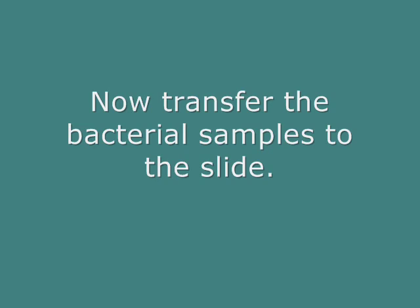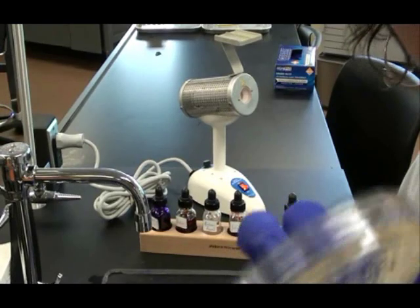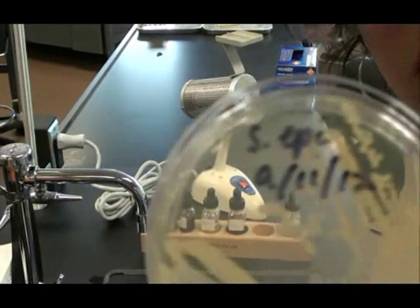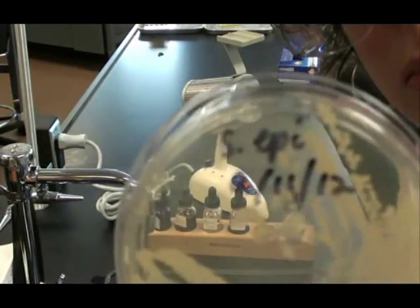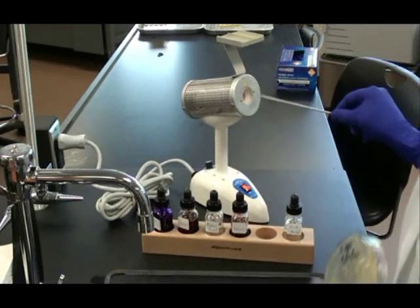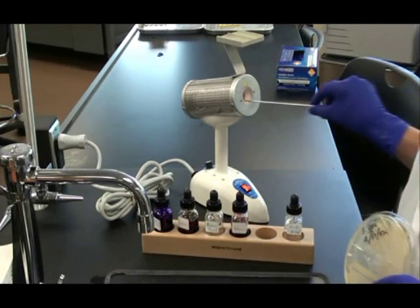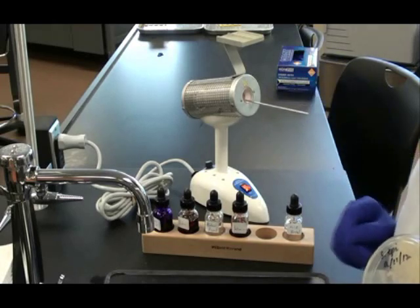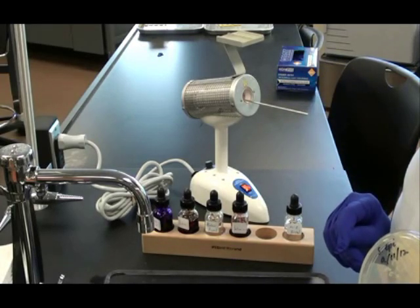Now I'm going to transfer my bacterial samples to the microscope slide. I'm going to start with my positive control, Staph epi, or Staphylococcus epidermidis. I use Staph as my positive control because it is a known Gram positive organism that I can compare my unknown to.